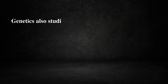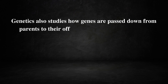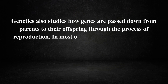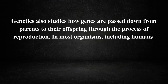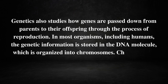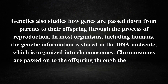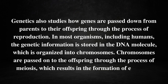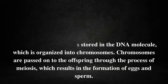Genetics also studies how genes are passed down from parents to their offspring through the process of reproduction. In most organisms, including humans, the genetic information is stored in the DNA molecule, which is organized into chromosomes. Chromosomes are passed on to the offspring through the process of meiosis, not mitosis, which results in the formation of eggs and sperm.